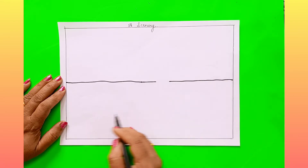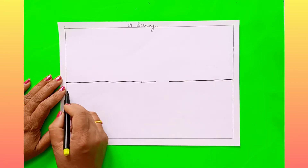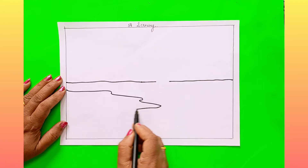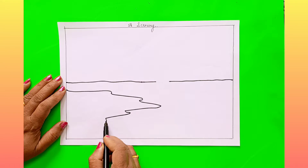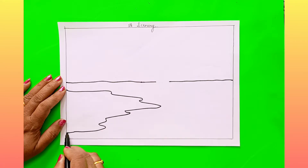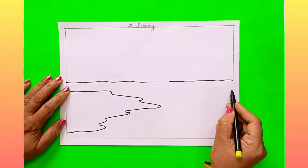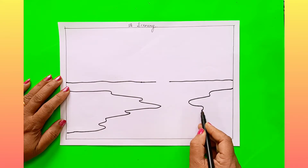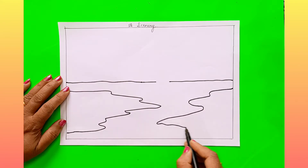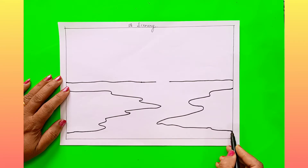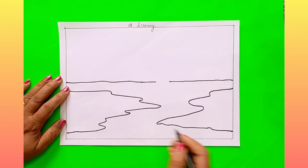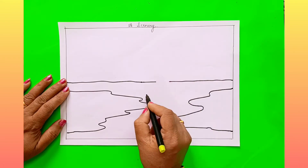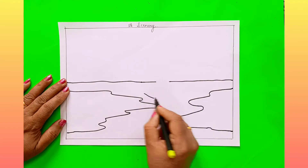Like this. After this, start from here and join it here. Now again, like this you have to draw. After this, draw two slanting lines.